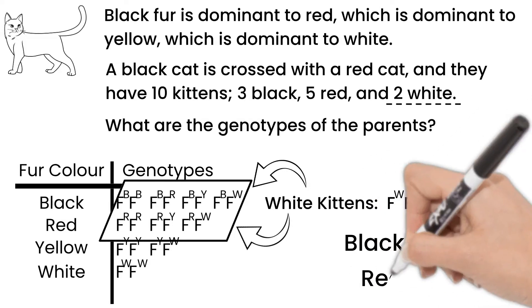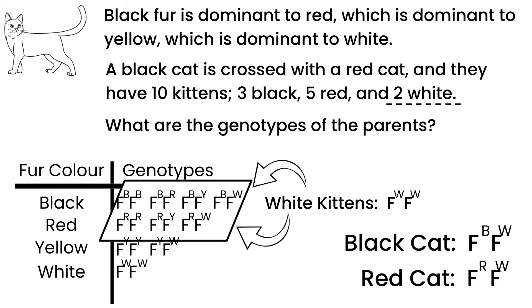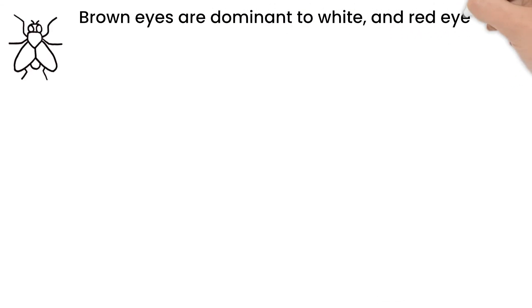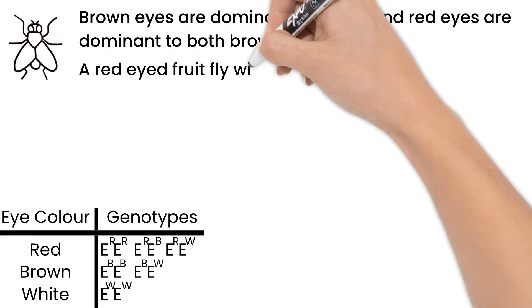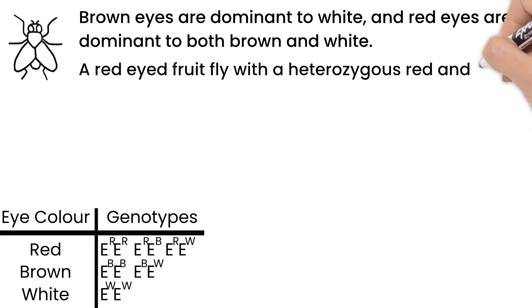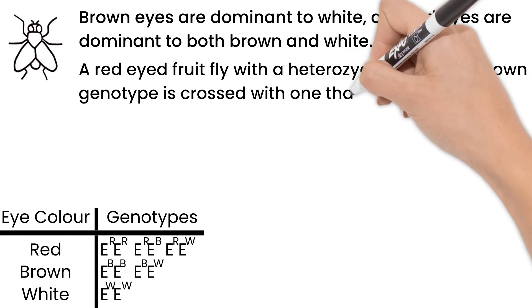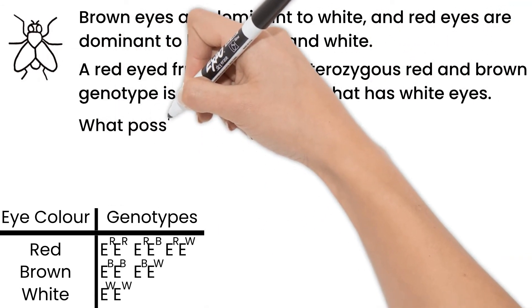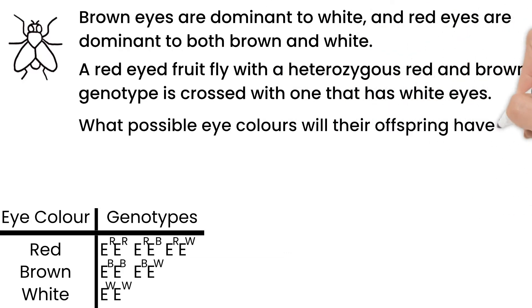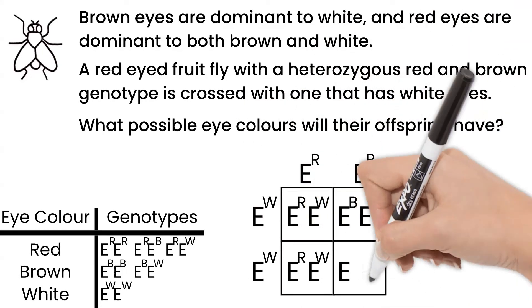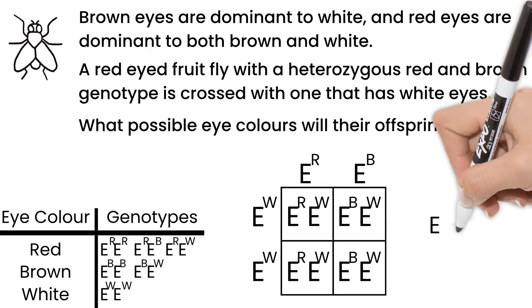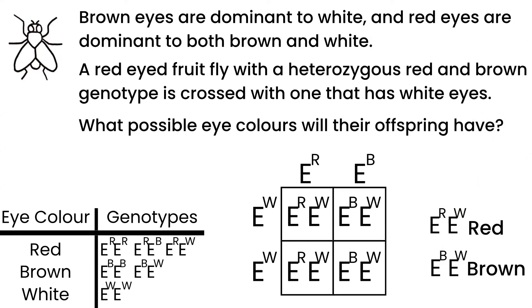We'll look at another example. In fruit flies, let's say brown eyes are dominant to white, and red is dominant to both brown and white. A red-eyed fruit fly with a heterozygous red and brown genotype is crossed with one with white eyes. What possible eye colors will their offspring have? Let's plug them into a Punnett square. The offspring will either have red or brown eyes.